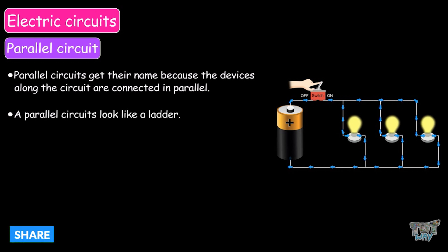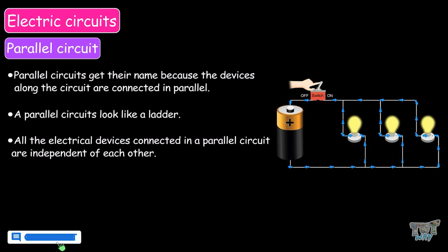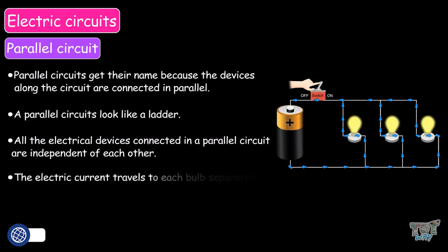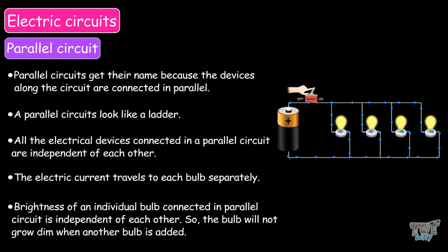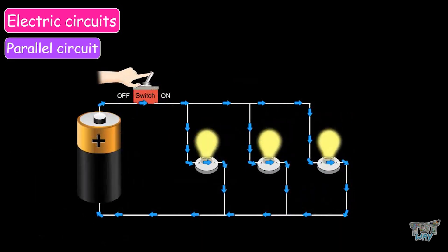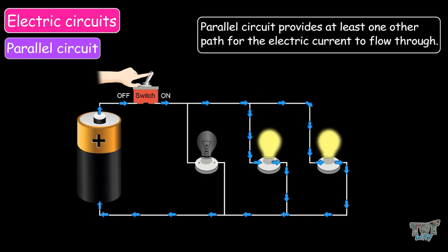Parallel circuits look like ladders. All the electrical devices connected in a parallel circuit are independent of each other, and the electric current travels to each bulb separately. The brightness of an individual bulb connected in parallel is independent, so the bulb will not grow dim when another bulb is added. In a parallel circuit, if one bulb breaks or burns out, the other bulbs will remain lit, because a parallel circuit provides at least one other path for the electric current to flow through.